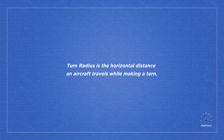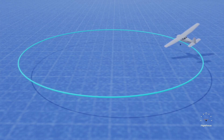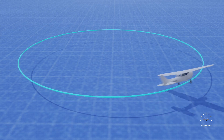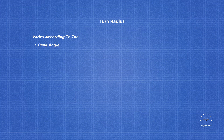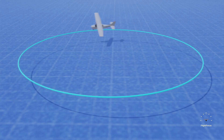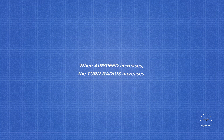Turn radius is the horizontal distance an aircraft travels while making a turn. It depends on the bank angle and airspeed. The steeper the bank angle and the faster the airspeed, the smaller the turn radius. The turn radius is measured from the center of the turn and varies according to the bank angle and the square of the true airspeed. When airspeed increases, the turn radius also increases, and when the rate of turn increases, the turn radius decreases.